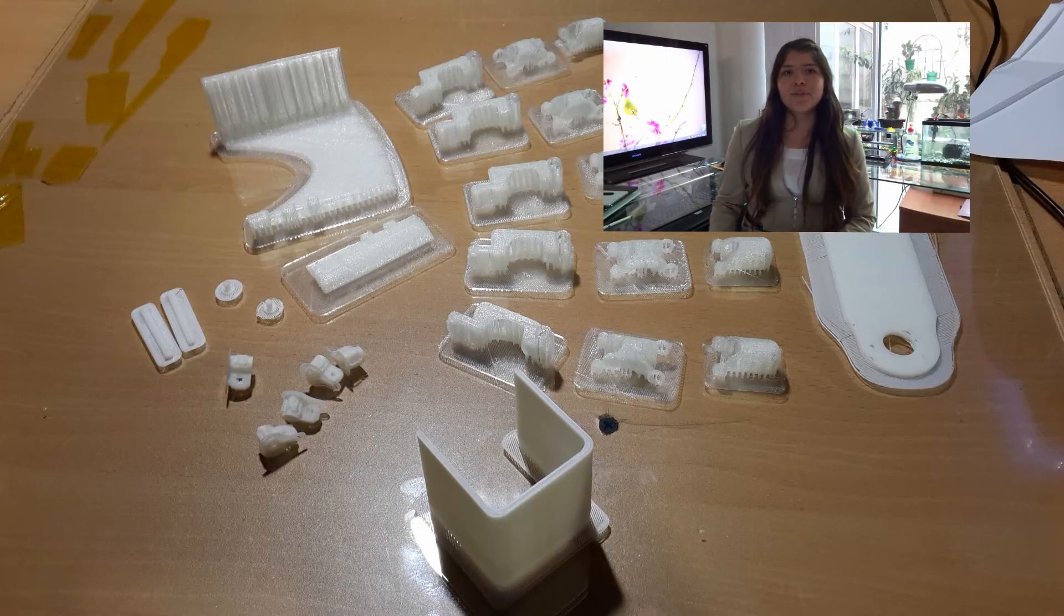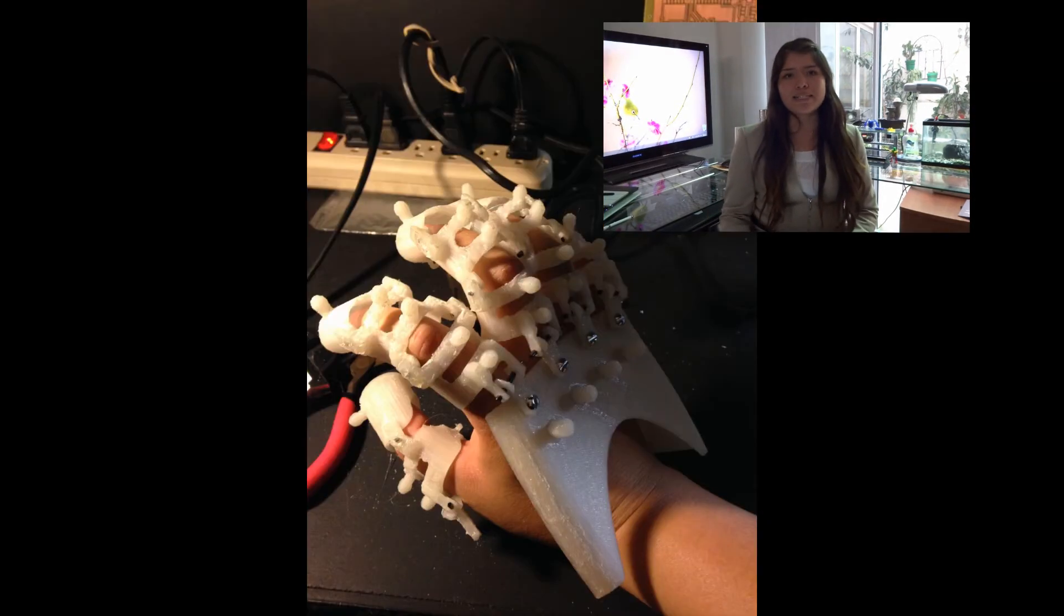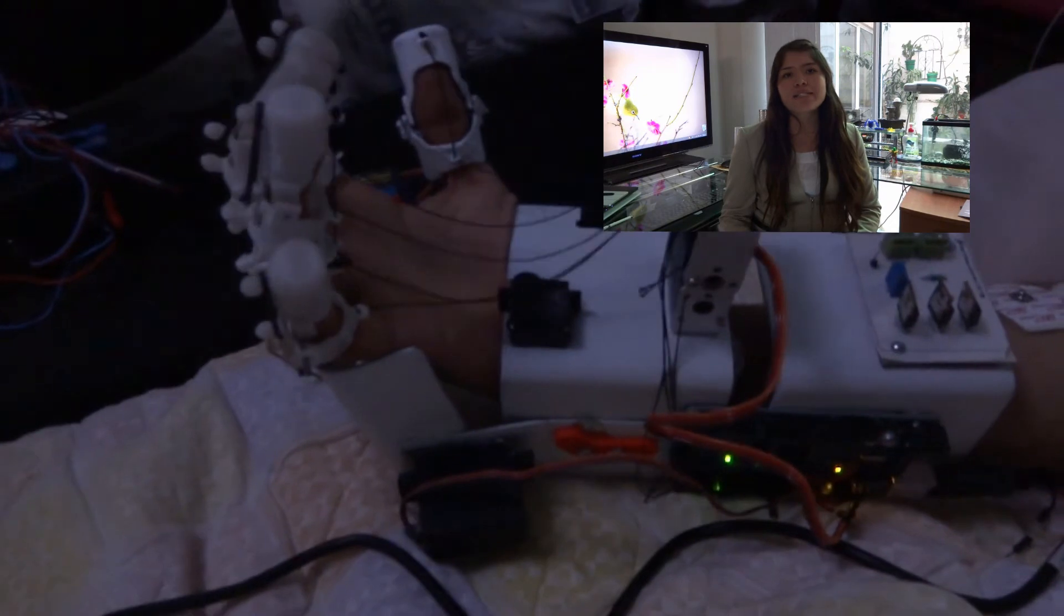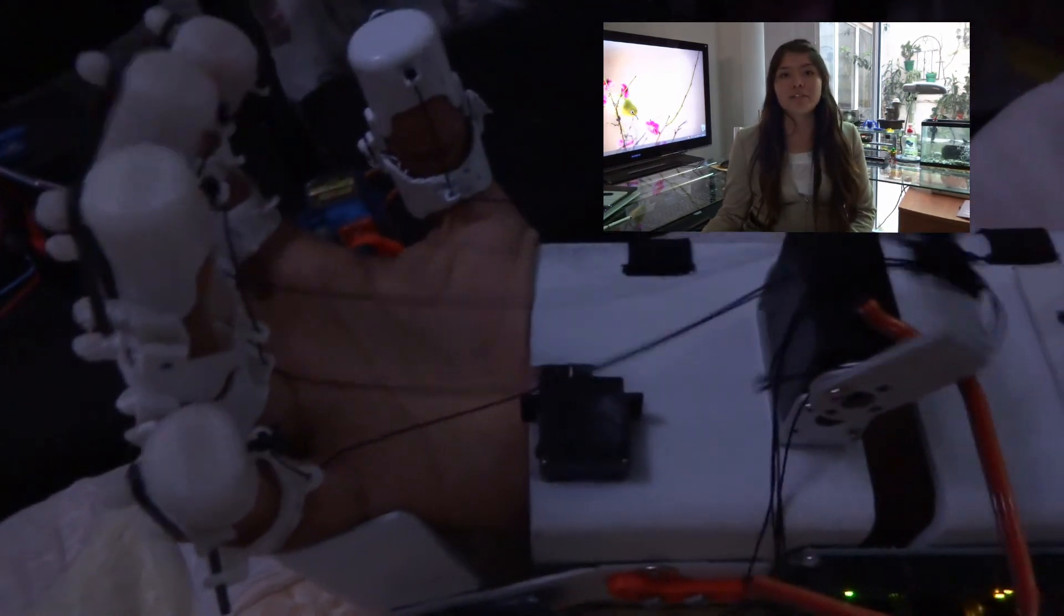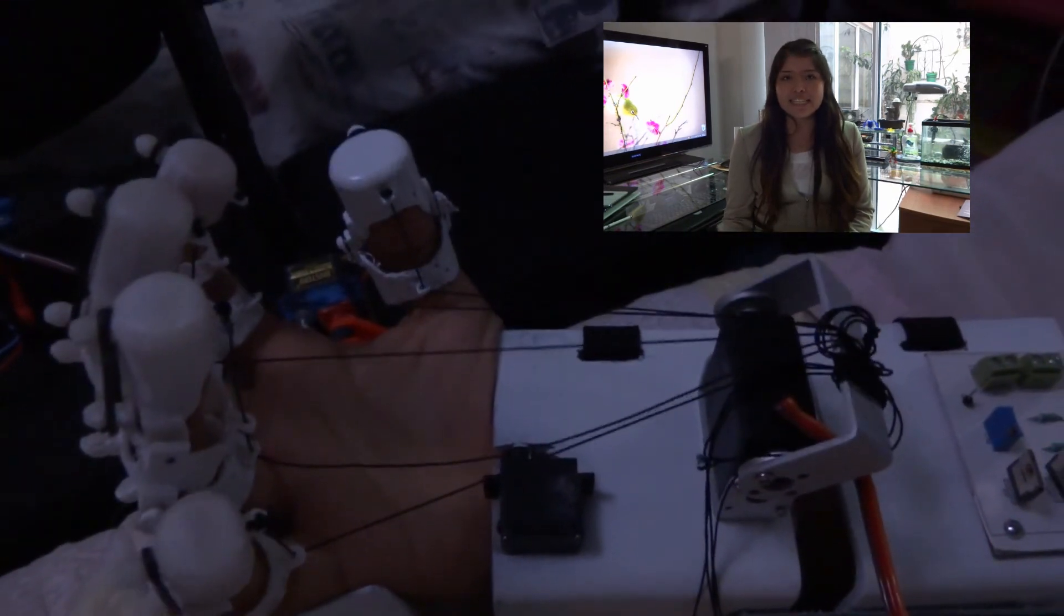The prototype is light because we use the 3D printing technique, using a plastic known as PLA. The PLA gives resistance to our prototype and also provides portability and lightness.